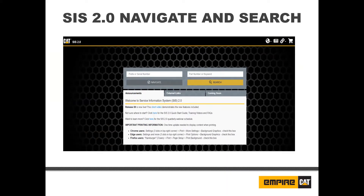Next, we will discuss navigate and search. To start off, we will discuss the three tabs at the center of the page. The first tab, announcements. Here you will see the newest information regarding Sys 2.0 releases, links to training videos, and other information the Caterpillar Sys 2.0 team wants to bring to your attention.